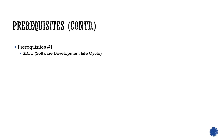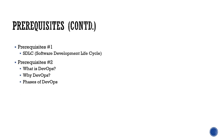The first prerequisite we want you to know is the SDLC, which is known as Software Development Life Cycle. Why do you need to know SDLC? Because whenever you are creating any kind of project, whenever you are a DevOps engineer or you want to create any project from coding till delivery, you need to understand the Software Development Life Cycle.